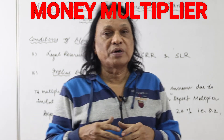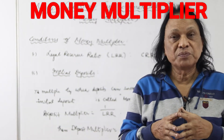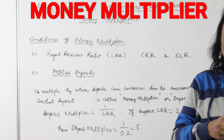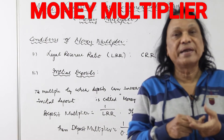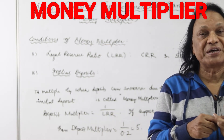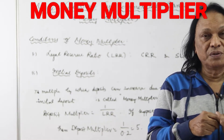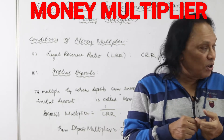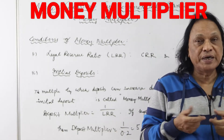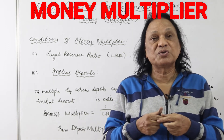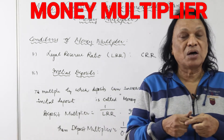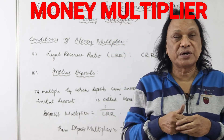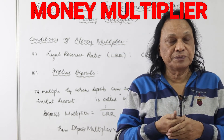There are two conditions for money multiplier or credit creation of commercial banks. The first condition is LRR — Legal Reserve Ratio. All commercial banks are supposed to keep a part of their cash reserves either with the central bank or with themselves, without giving it as loans or credit to their customers.